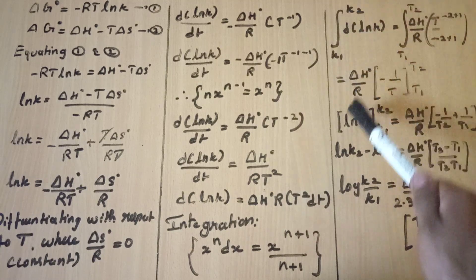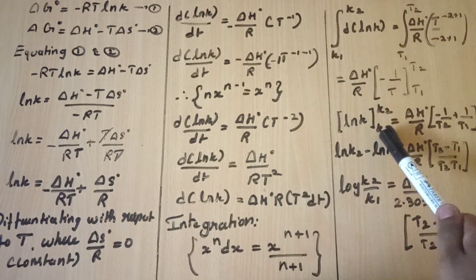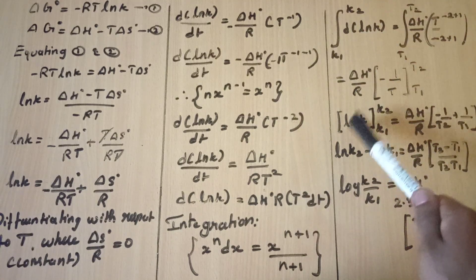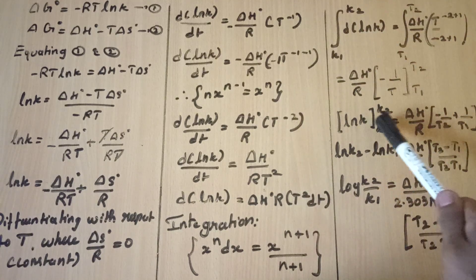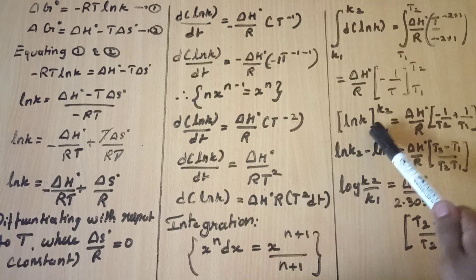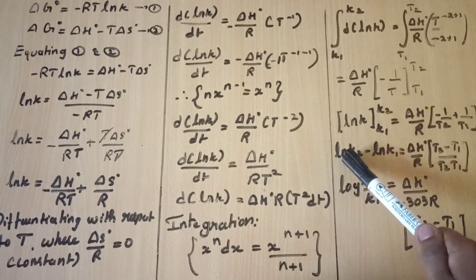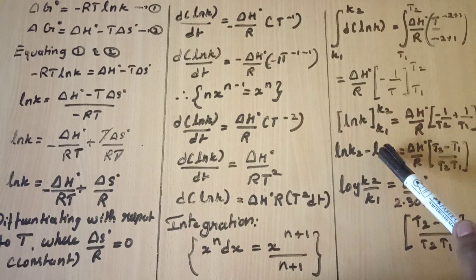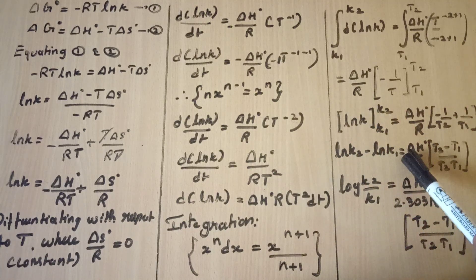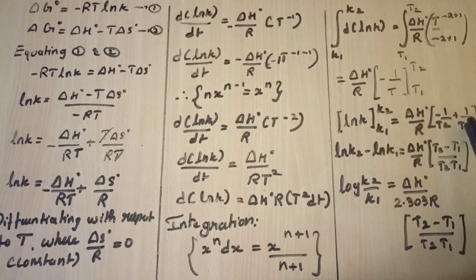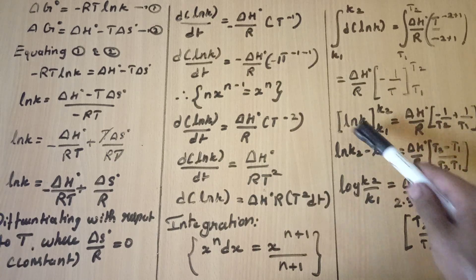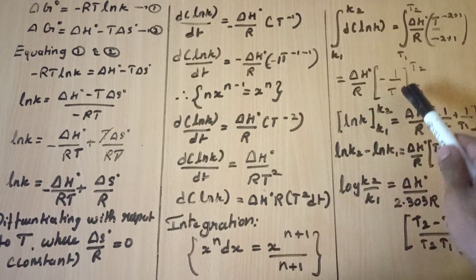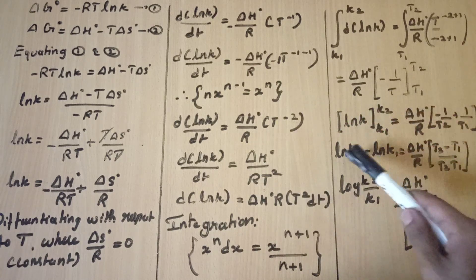Let's integrate this: ln K evaluated from K1 to K2. So ln K2 minus ln K1 gives us the result. Delta H dot then involves T2 first, then T1.